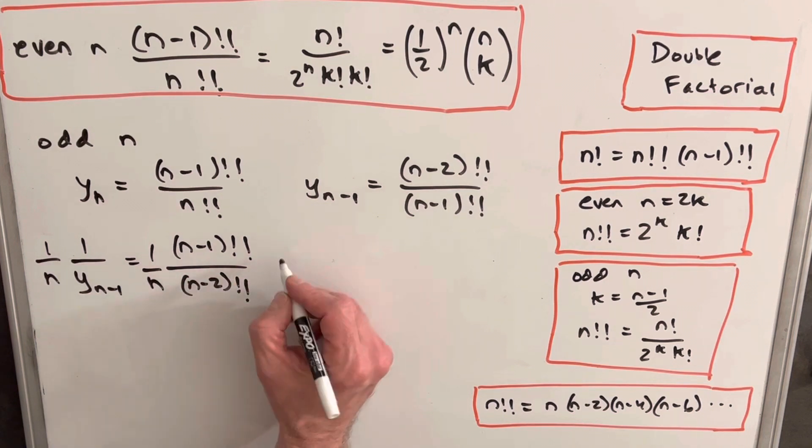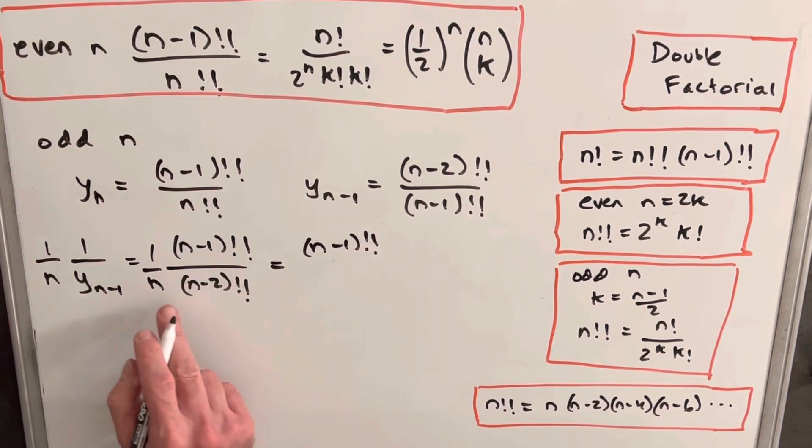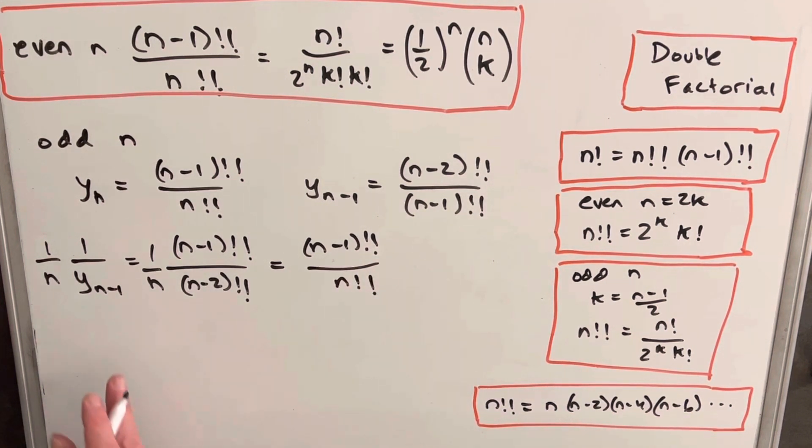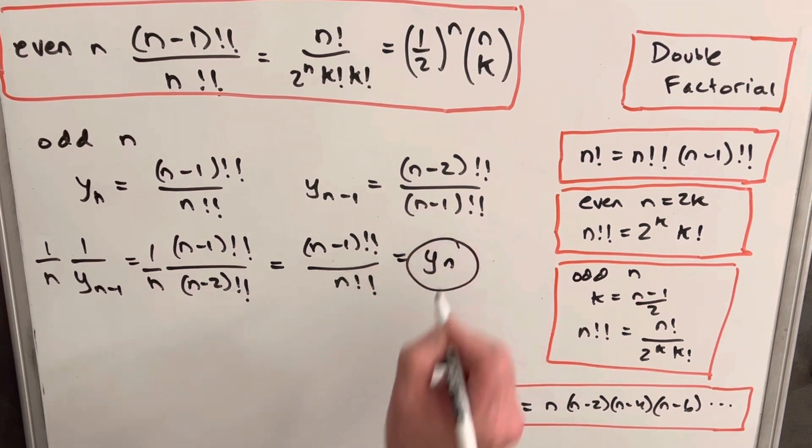And then you'll notice what happens here. We have n minus 1 double factorial in the numerator, but n times n minus 2 double factorial, it ends up looking exactly like that, which is just n double factorial. So we've actually kind of rearranged this so that we have precisely our y sub n, which is what we're looking for.